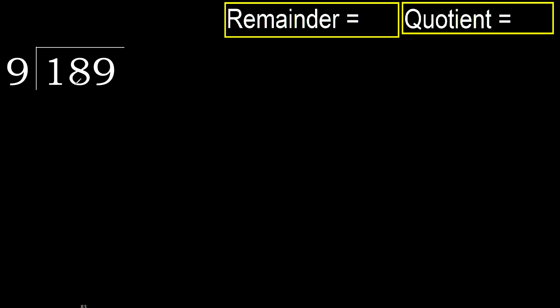189 divided by 9. 1 is less, therefore next. 18 is not less, therefore with 18. 9 multiplied by which number is nearest to 18 but not greater?